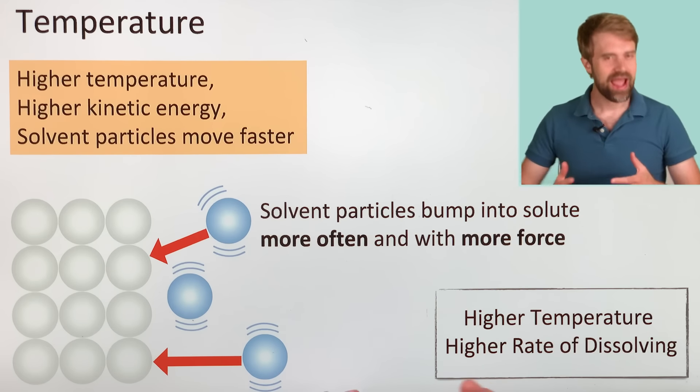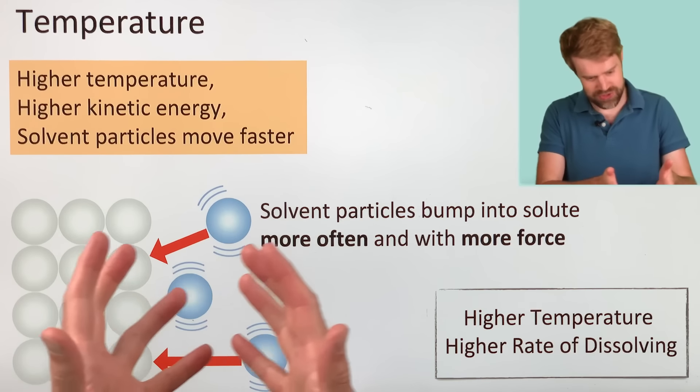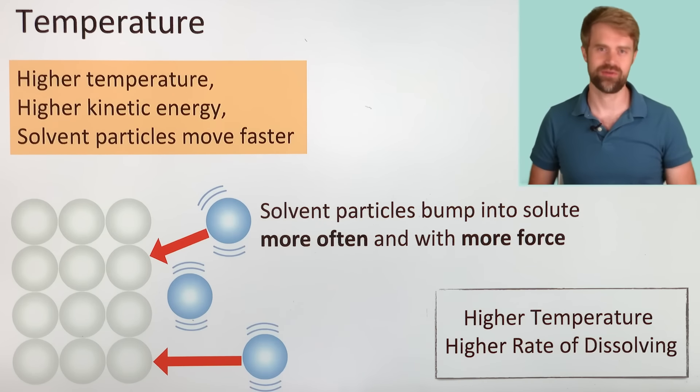So, at higher temperature, these solvent particles, the water molecules here, are going to be moving around faster. So they will literally bump into the solute more often. Because they're moving faster, they're also going to be banging into the solute particles with more force. And that will make it easier for the solute particles to break away from the solid surface and become solvated.